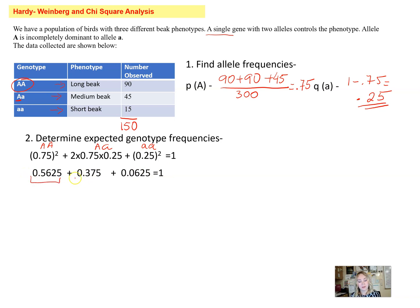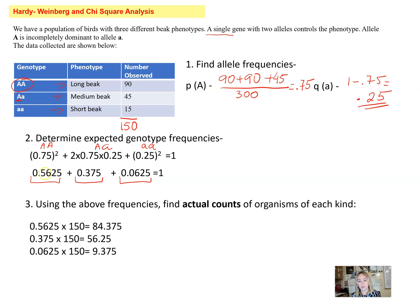The next thing we need to do is determine the actual counts, because we cannot put the frequencies in the chi-square formula. We're going to take our current population and multiply by the expected genotype frequency. We have 0.5625—I'm keeping all my decimals because I like to round it at the very end—and then notice we are multiplying it by 150, that's the total population that we currently have.